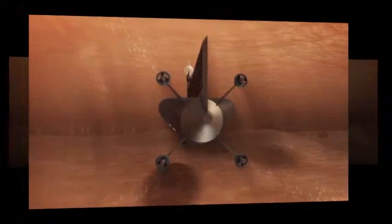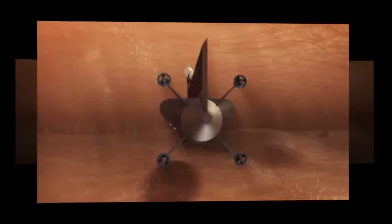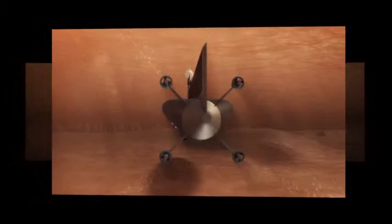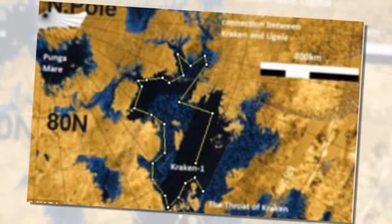Sprawling over 154,000 square miles (400,000 square kilometers) and around 300 meters (1,000 feet) deep, Krokenmare is comparable in size to the Great Lakes in North America.